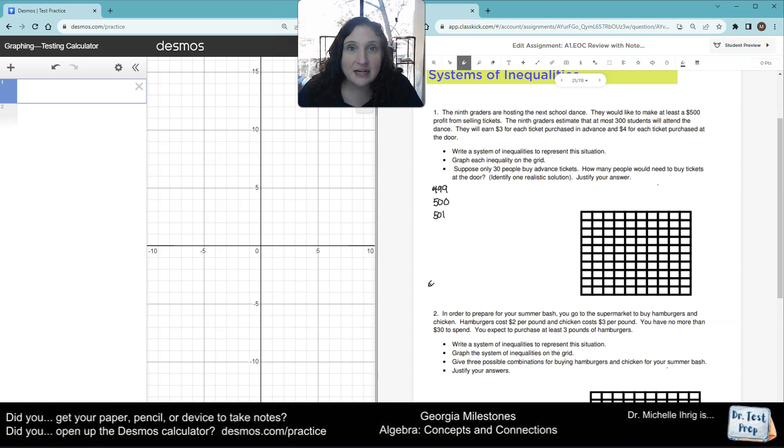If they make $499, will they be happy? No. If they make $500, will they be happy? Yes. If they make $501, will they be happy? Yes. So we know that whatever our equation is, it's going to end in $500, but we need it to be bigger than or equal to $500.